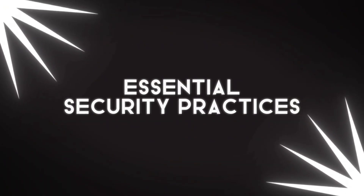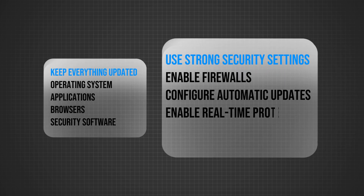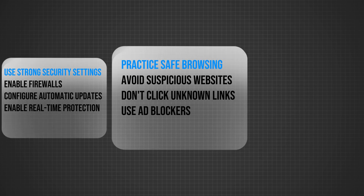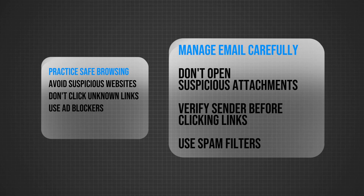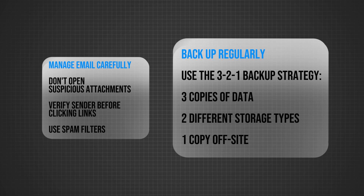Essential security practices: Keep everything updated — operating system, applications, browsers, and security software. Use strong security settings: enable firewalls, configure automatic updates, and enable real-time protection. Practice safe browsing: avoid suspicious websites, don't click unknown links, and use ad blockers. Manage email carefully: don't open suspicious attachments, verify sender before clicking links, and use spam filters. Backup regularly using the 3-2-1 backup strategy: three copies of data, two different storage types, one copy off-site.